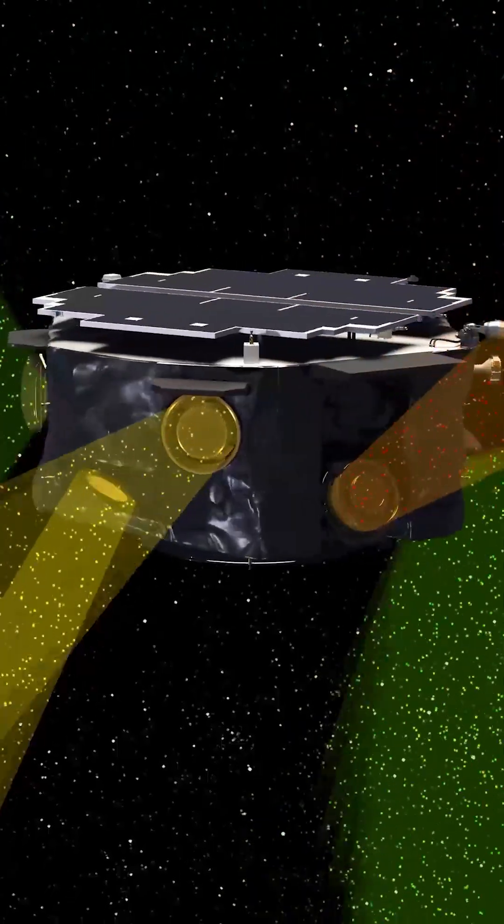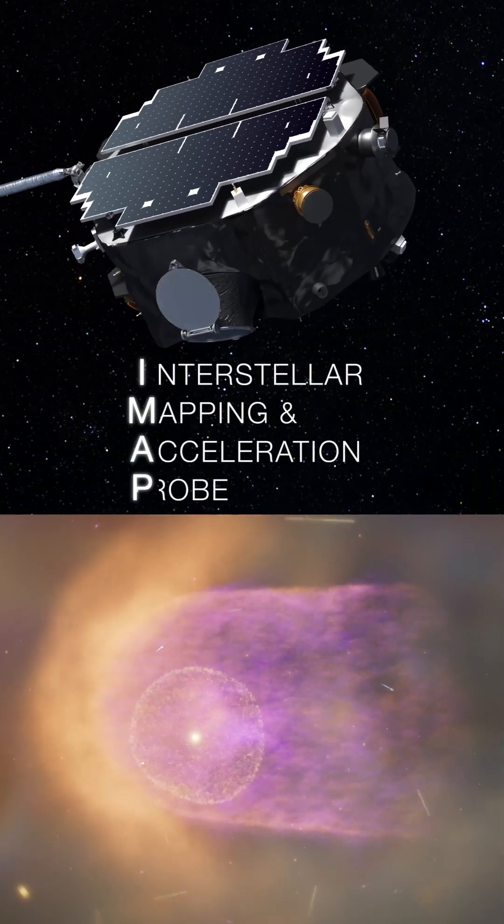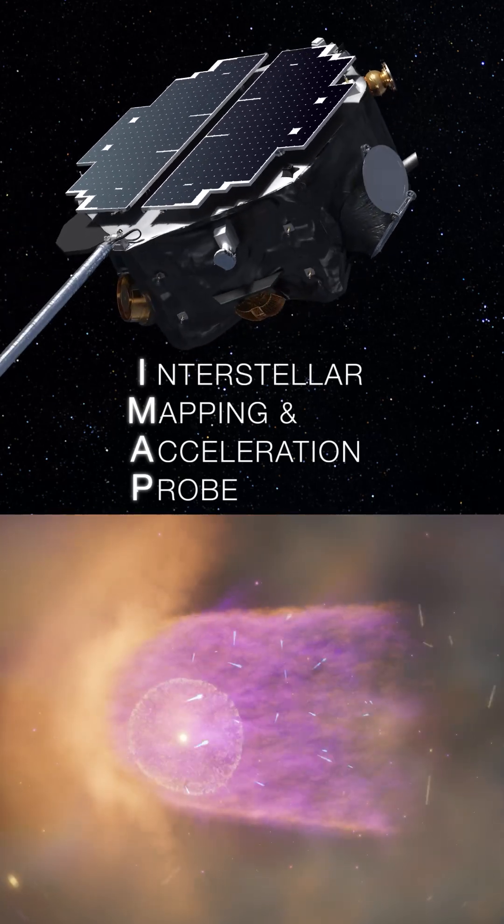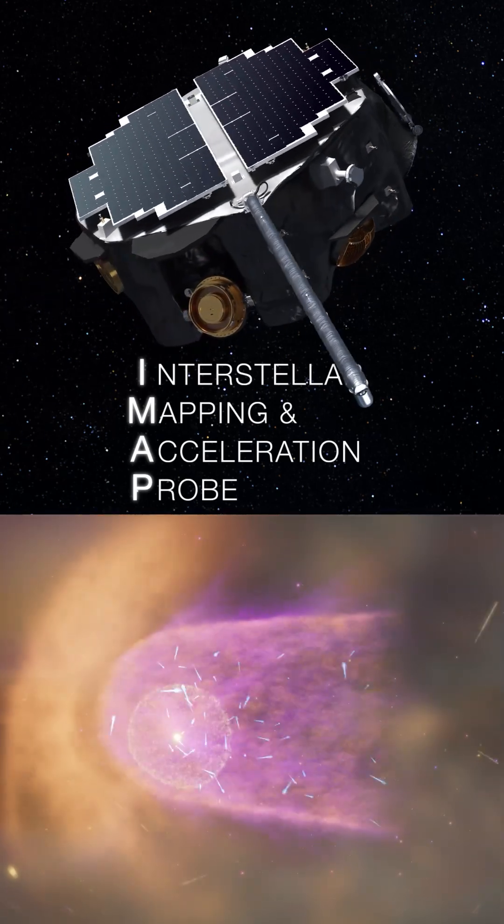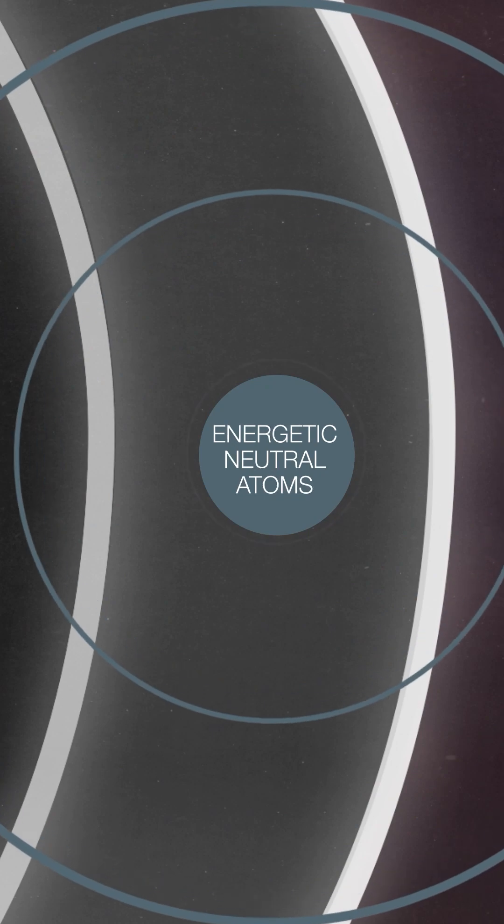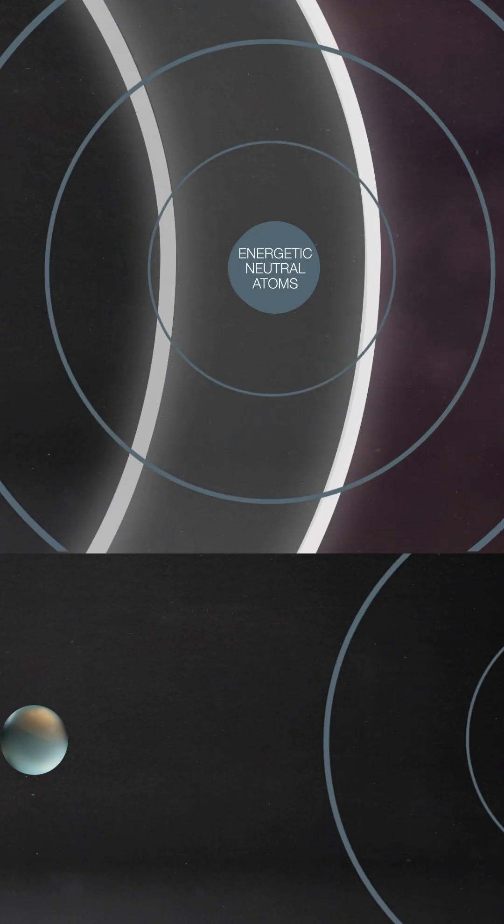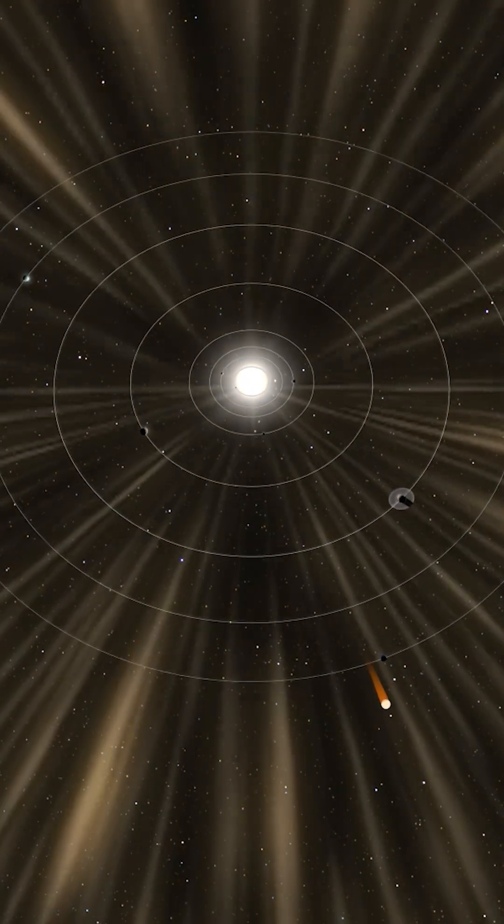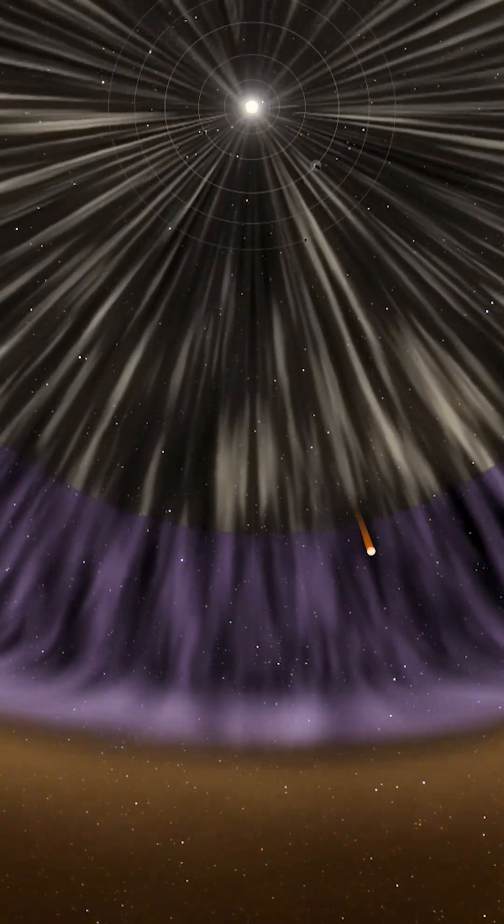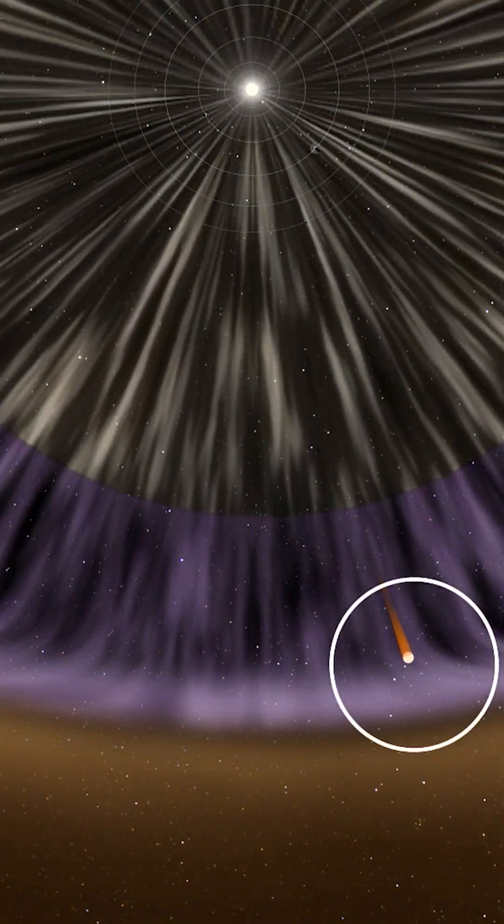But a new NASA mission will soon unlock these answers, having just launched NASA's Interstellar Mapping and Acceleration Probe, or IMAP. IMAP will use a technique kind of like listening for echoes that bounce off of our heliosphere exterior walls. Instead of sound waves, these echoes are particles that ricochet off of the heliosphere edges.